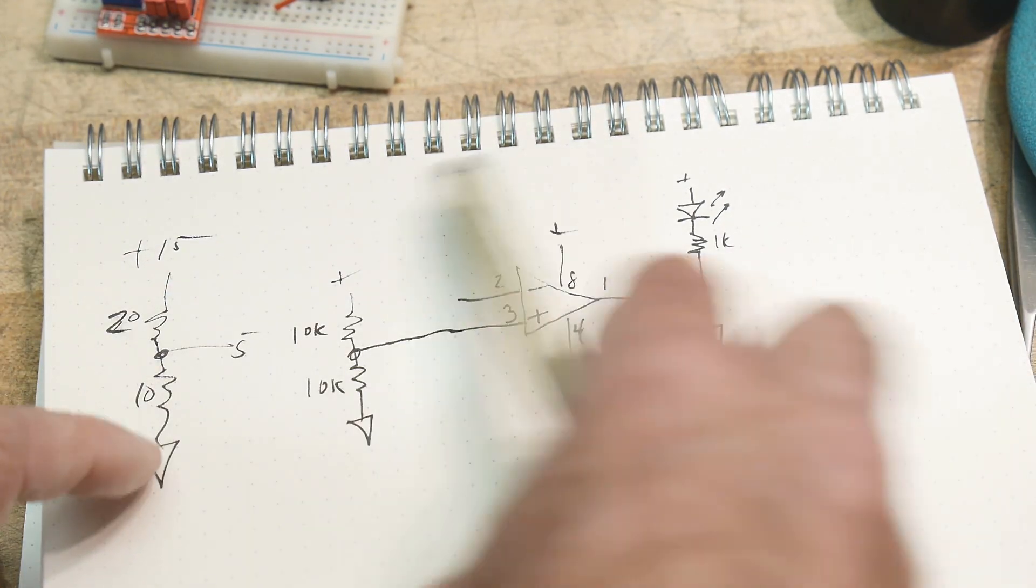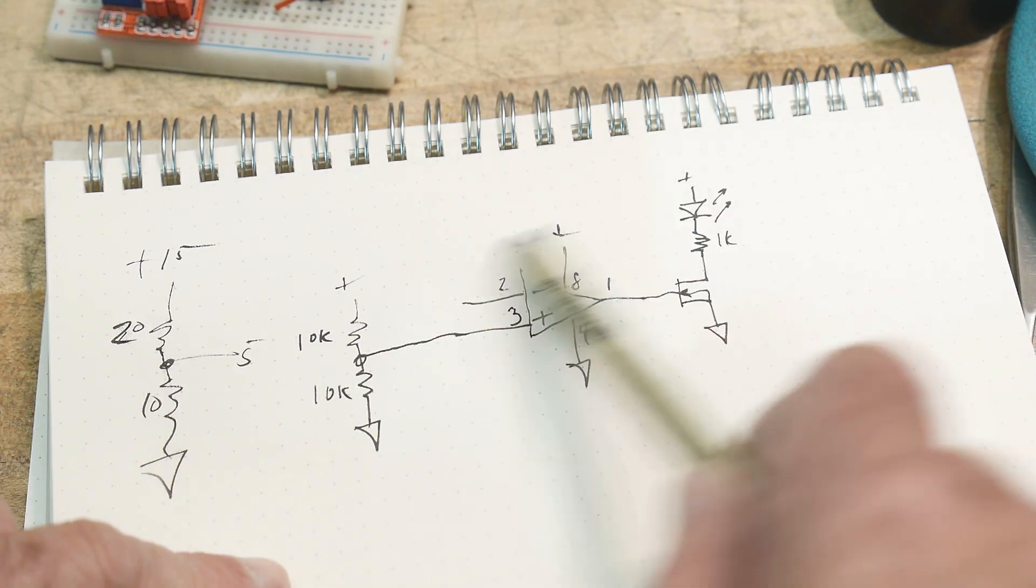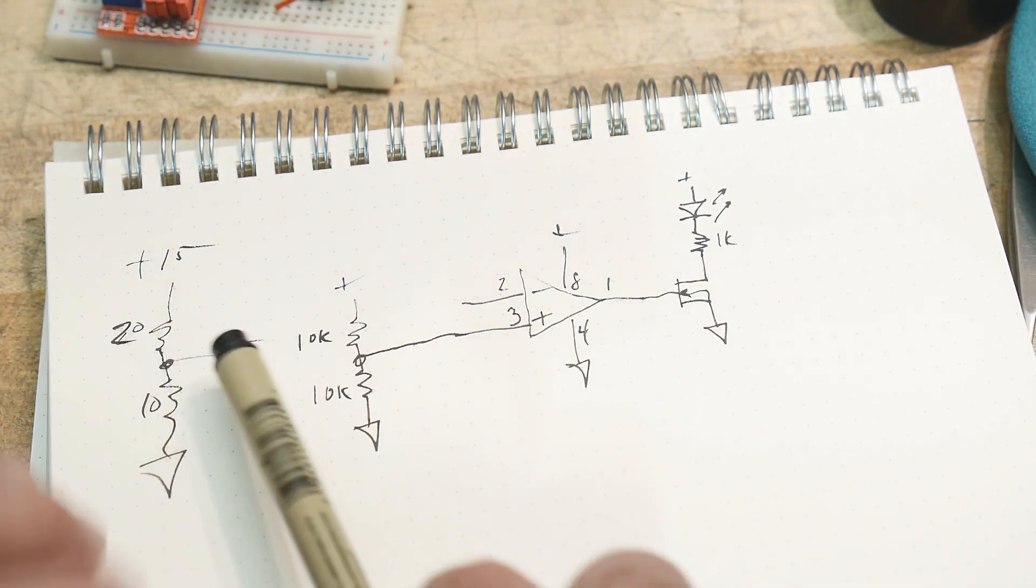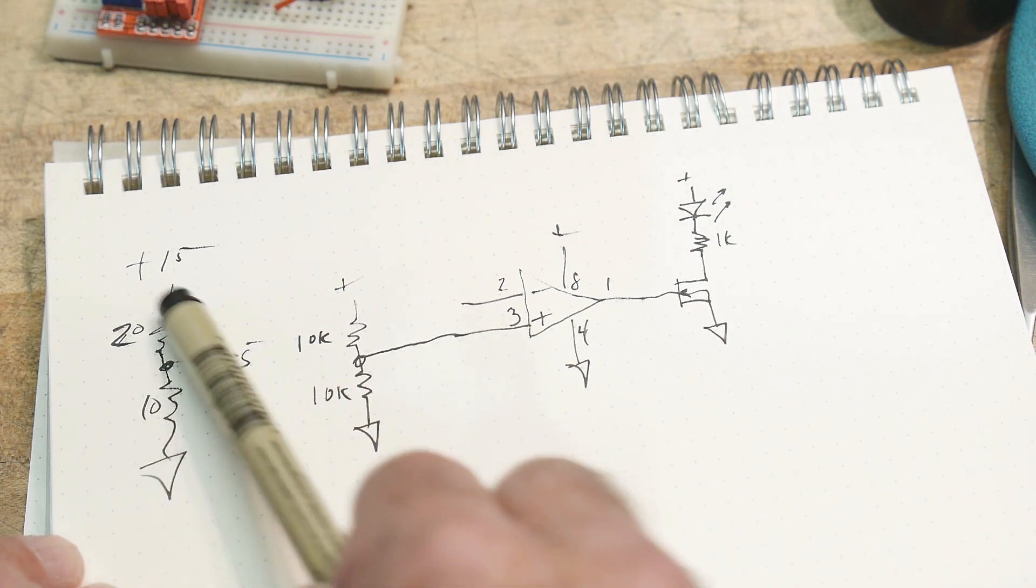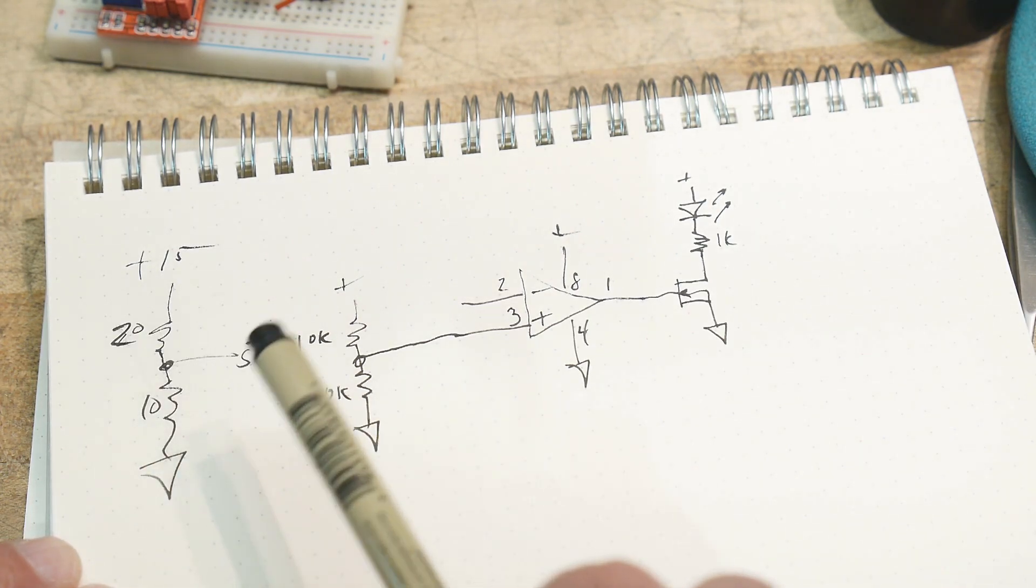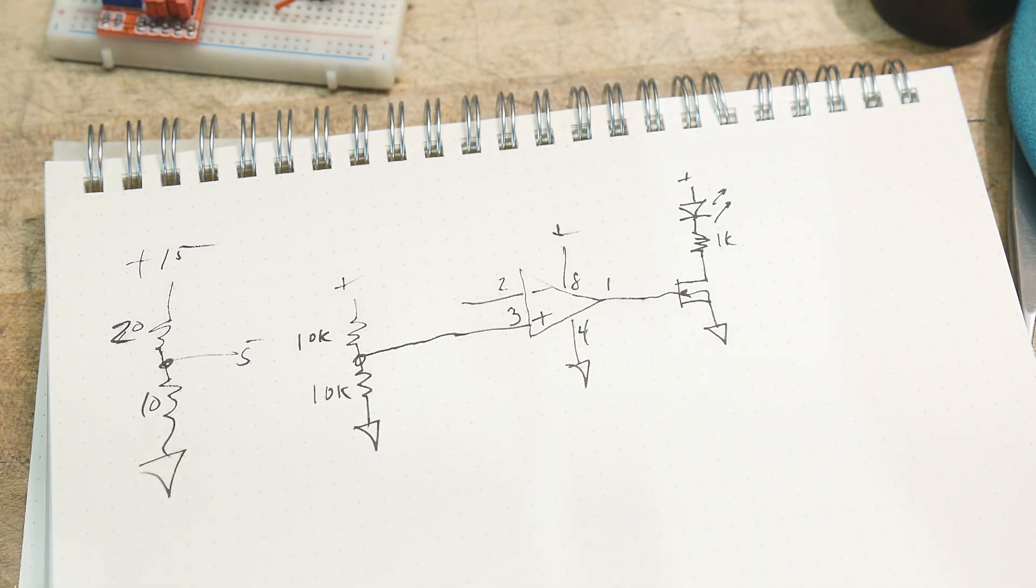Now it's kind of interesting, right? We have a 10 volt supply on this part of the circuit, but we're able to measure higher voltages because we're using this resistor divider. Let's hook that up.